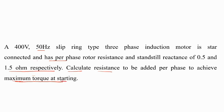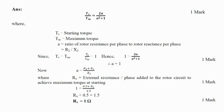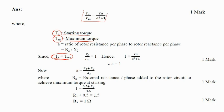Consider TS as starting torque and TM as maximum torque. The condition is that the starting torque should equal the maximum torque — that is, at the time when the induction motor is started, we should get maximum torque. So the condition is TS equals TM.